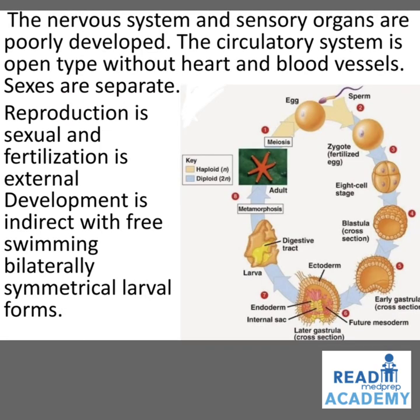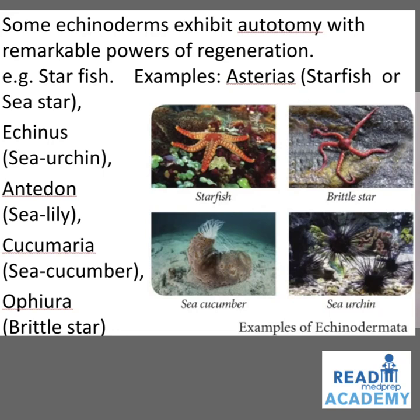The nervous system and sensory systems are poorly developed. The circulatory system is open type without heart and blood vessels. Sexes are separate. Reproduction is sexual and fertilization is external. Development is indirect with free-swimming bilaterally symmetrical larval forms. The starfish produces eggs and sperm by meiosis, which fertilize to form a zygote; the zygote forms an 8-cell stage, then a blastula, which develops into a gastrula, metamorphoses into a larval form with a digestive tract, and eventually becomes an adult starfish. Some echinoderms exhibit remarkable powers of regeneration — for example, the starfish.